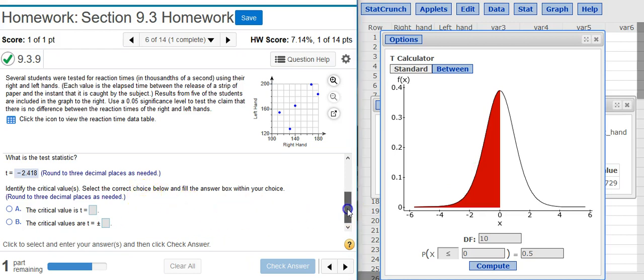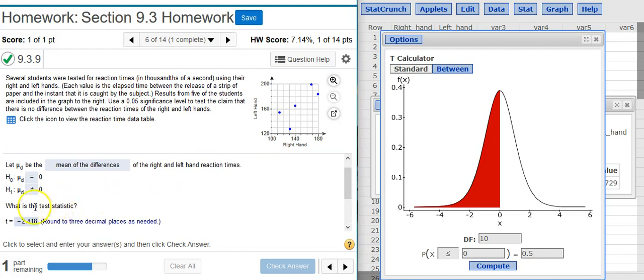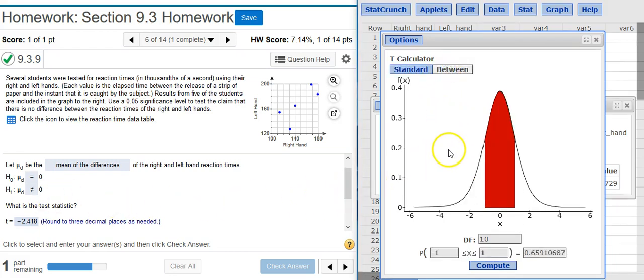First thing I want to look at is the alternative hypothesis, because this tells me, do I have a one-tailed test or a two-tailed test? And the alternative hypothesis says, not equal to. So, not equal to means we have a two-tailed test. So, I'm going to click the between option, and I'm going to have two critical values, one on the left, one on the right. Now, to get the correct critical value, I need first to enter in the corresponding value for degrees of freedom. We've got five data points you can see here, or you could actually, if you wanted to, you could go back and count them here in your StatCrunch window.